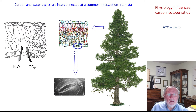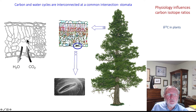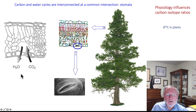Carbon and water cycles are connected at a common intersection: the stomata. Here we see stomata associated with a guard cell — two cells on either side that open to allow the diffusion in of CO2 for photosynthesis, at the same time allowing for the loss of water through transpiration. So the dynamics of the stomata represent a trade-off between CO2 uptake and water loss.